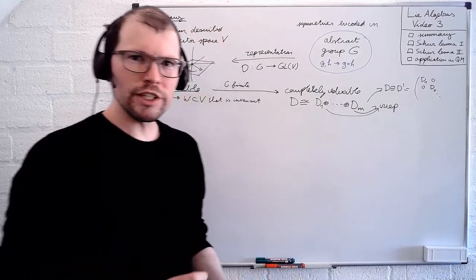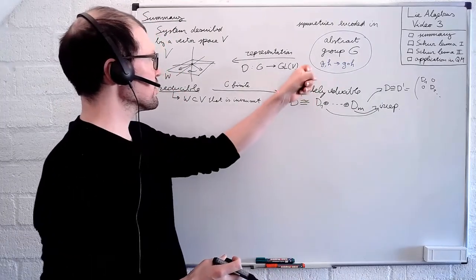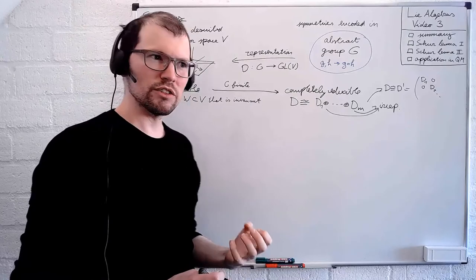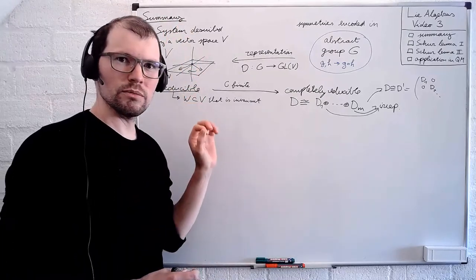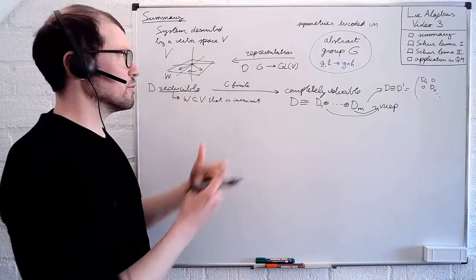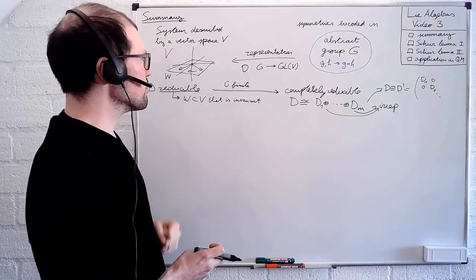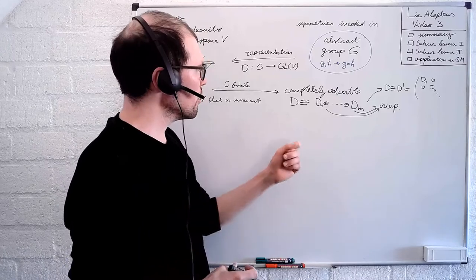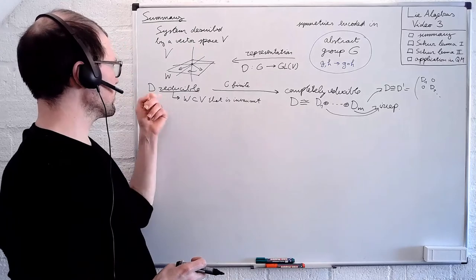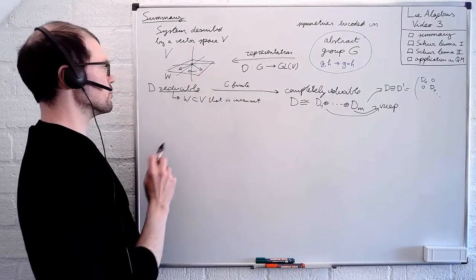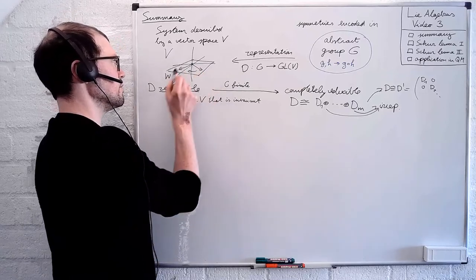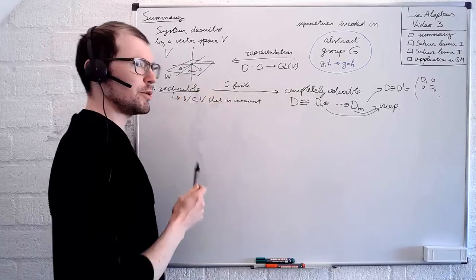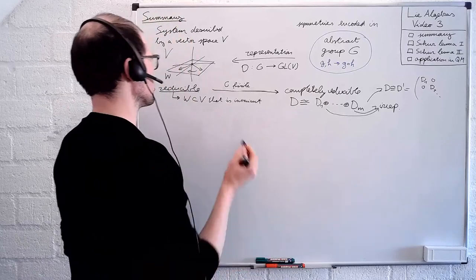Very roughly, what we're going to see is that having an irreducible representation on your vector space implementing some symmetry puts very stringent conditions on the properties of your system. For instance, if I have a Hamiltonian that must be invariant under these symmetries, and these symmetries are implemented in an irreducible fashion, then this Hamiltonian will have to take a very particular form on the vector space. If it's reducible, you can restrict attention to the irreducible components, and the Hamiltonian restricted to each subspace must satisfy stringent properties.